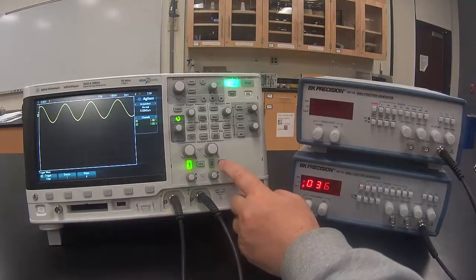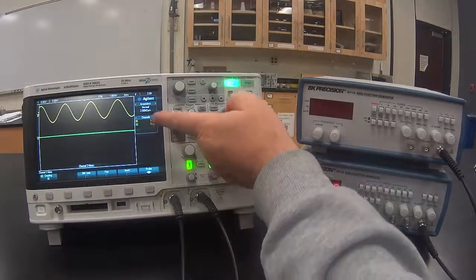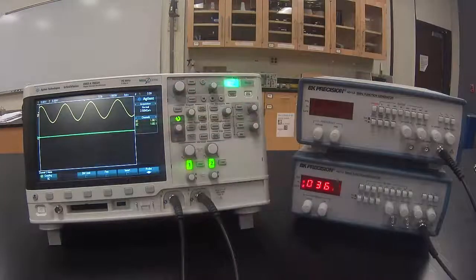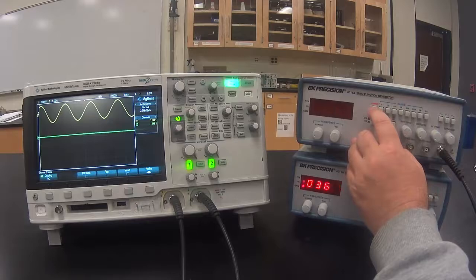Push the number 2 button on the second channel to turn it on. It's displayed as a straight line right now because the second function generator has not been turned on. Turn on the second function generator.